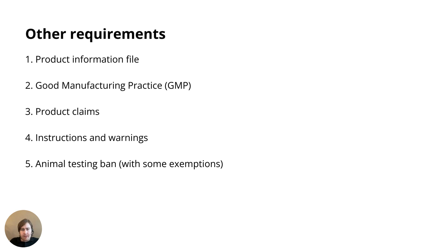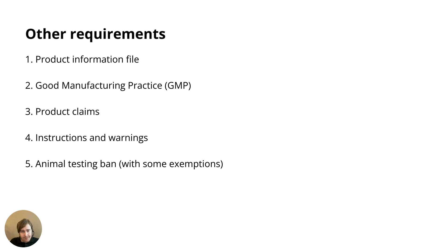Regarding product claims, there are conditions and restrictions for what you can claim about a product — you cannot make claims that could mislead the consumer or that cannot be backed by data and testing. On instructions and warnings: warning texts and instructions are never an accepted substitute for non-compliance. You cannot include substances that are banned or restricted and then apply a warning label to mitigate that. Finally, there is also an animal testing ban, with some exemptions.